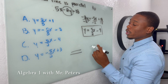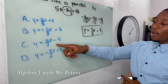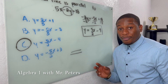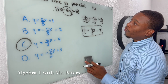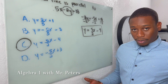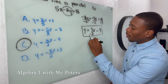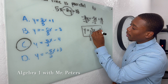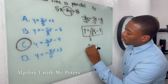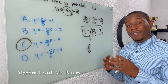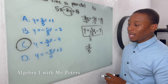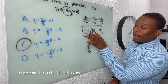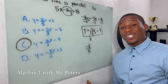We look at the answer choices for one that has the same slope, and we notice that only choice C has a positive 5/2 slope — so that's our correct answer for parallel. But if it asks for a perpendicular line, we need the negative reciprocal of 5/2. Taking the reciprocal gives 2/5, then making it negative gives −2/5. So for perpendicular, we'd look at choice B.